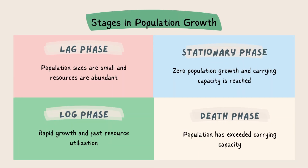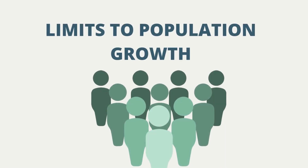Population growth has four phases that need to be observed. The first phase is the lag phase, where population size is still small and there are abundant resources. Next, the log or exponential phase, where rapid growth and utilization of resources is fast. The third phase is the stationary phase, where there is no population growth and the carrying capacity is reached. And lastly, the death or decline phase, the phase wherein the population has already exceeded its carrying capacity.